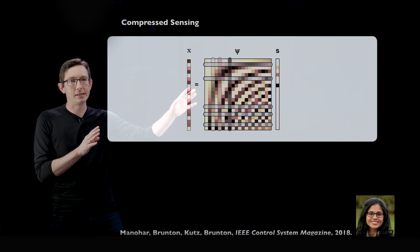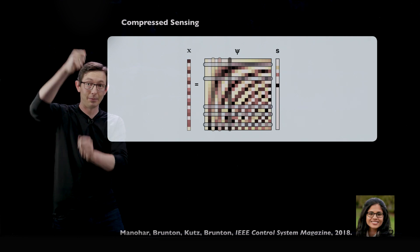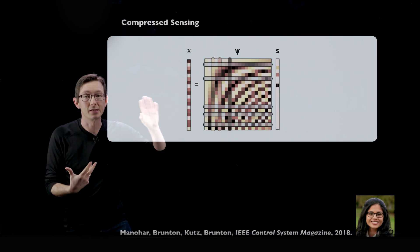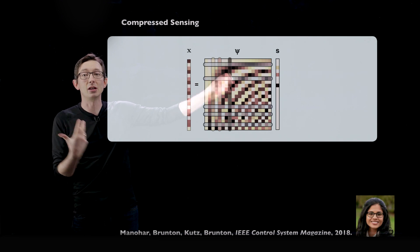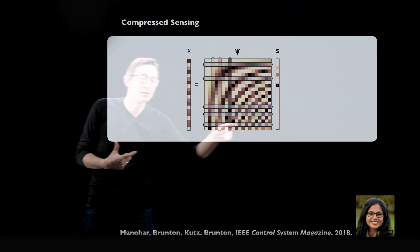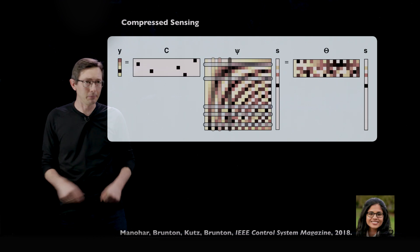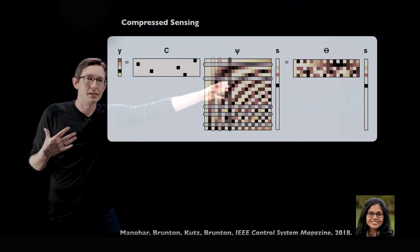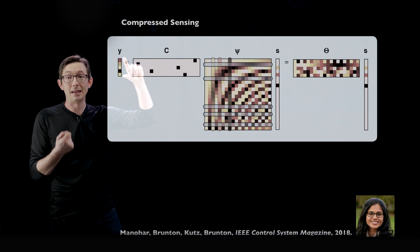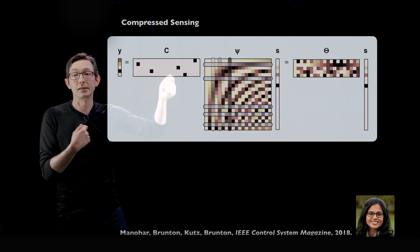To recap the compressed sensing picture: you have some high-dimensional signal X, which might be a high-resolution image reshaped as a very tall, skinny vector. We believe that most of these signals, most of these images, are sparse in some transform basis — like a Fourier transform or wavelet transform basis. In that basis, we have an S vector which is very sparse, and that's the basis of all image compression. The idea of compressed sensing is that when you have a signal that's sparse in some universal basis, you can get away with measuring a massively downsampled image Y, as long as those fewer measurements were taken in a somehow random way.